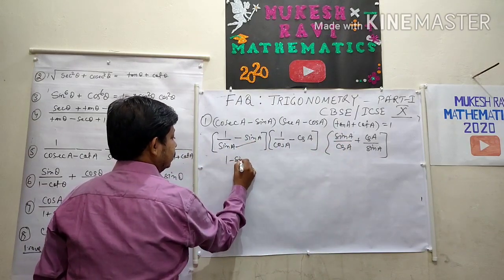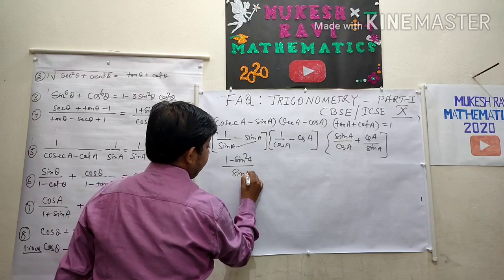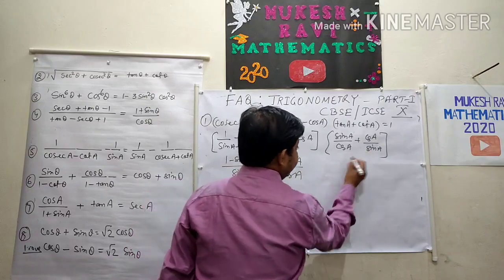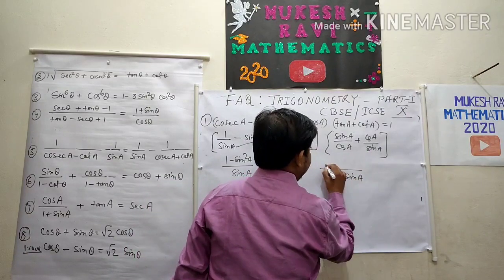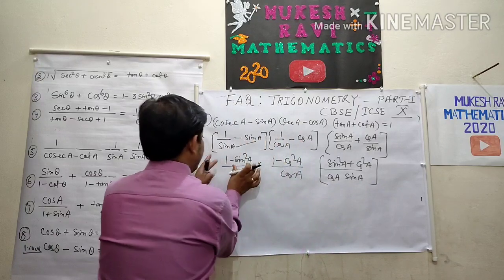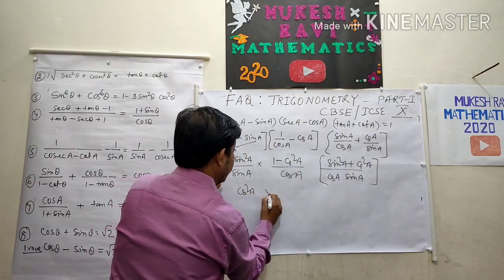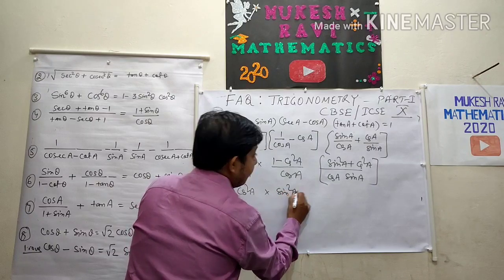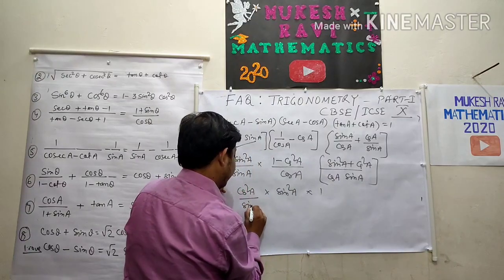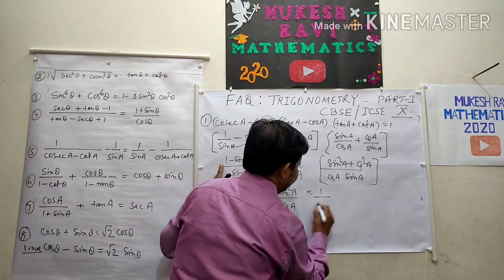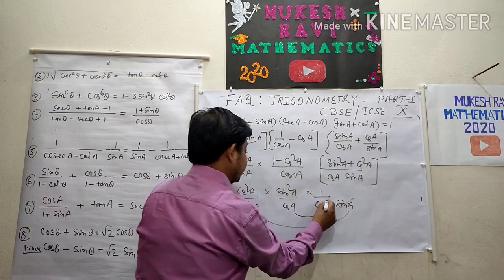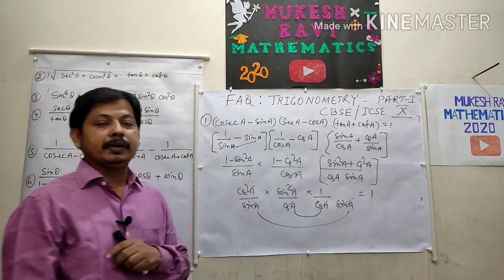Taking LCM: the first bracket gives (1 − sin²A)/sin A, and multiplying by (1 − cos²A)/cos A for the second bracket. Then taking LCM for the third bracket gives (sin²A + cos²A)/(cos A · sin A). Now 1 − sin²A is cos²A, and 1 − cos²A is sin²A, and sin²A + cos²A equals 1. Everything cancels out, and this equals 1.